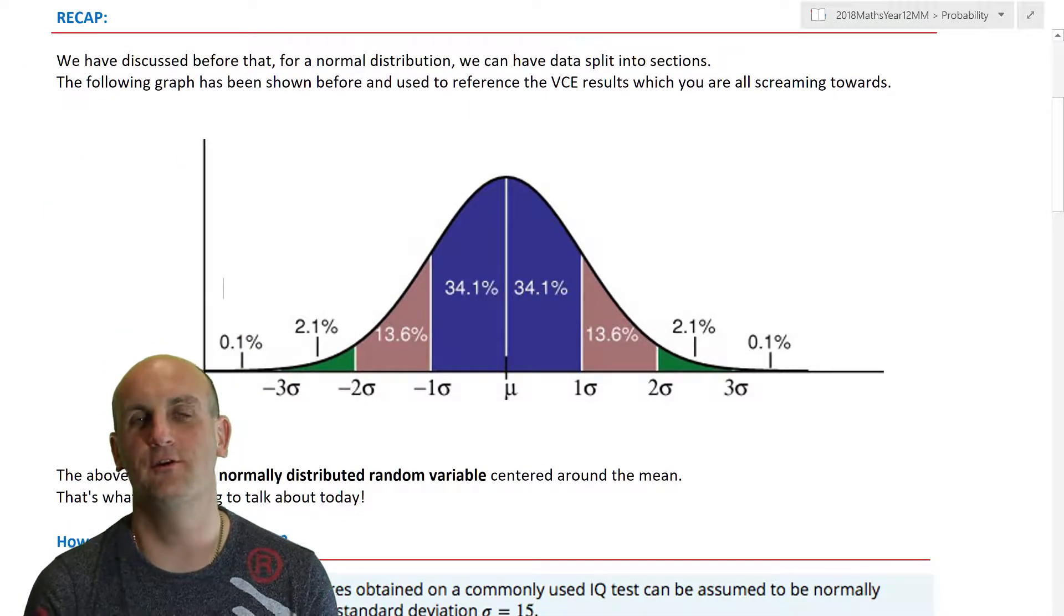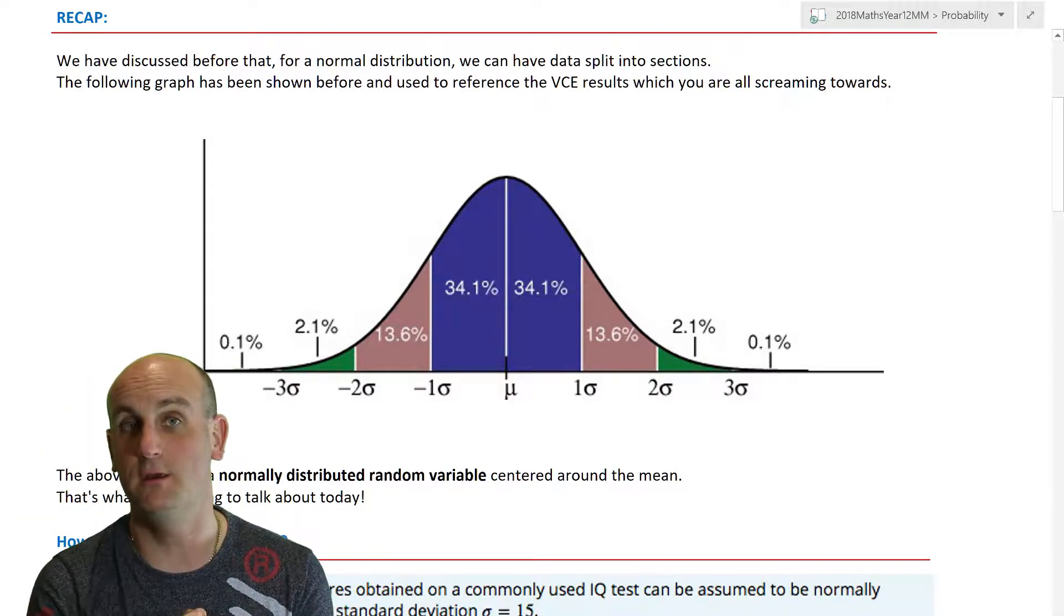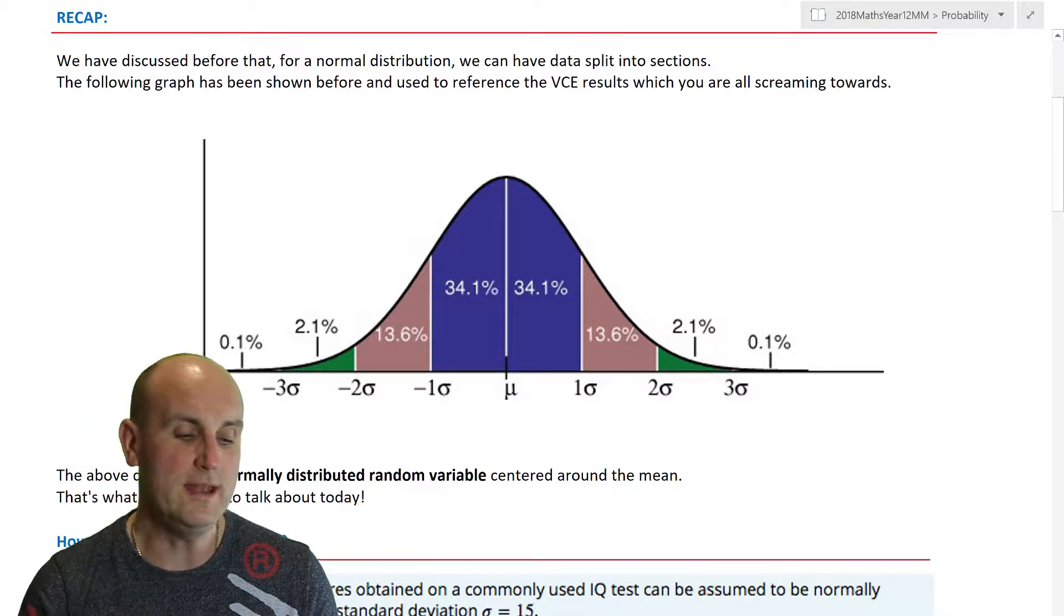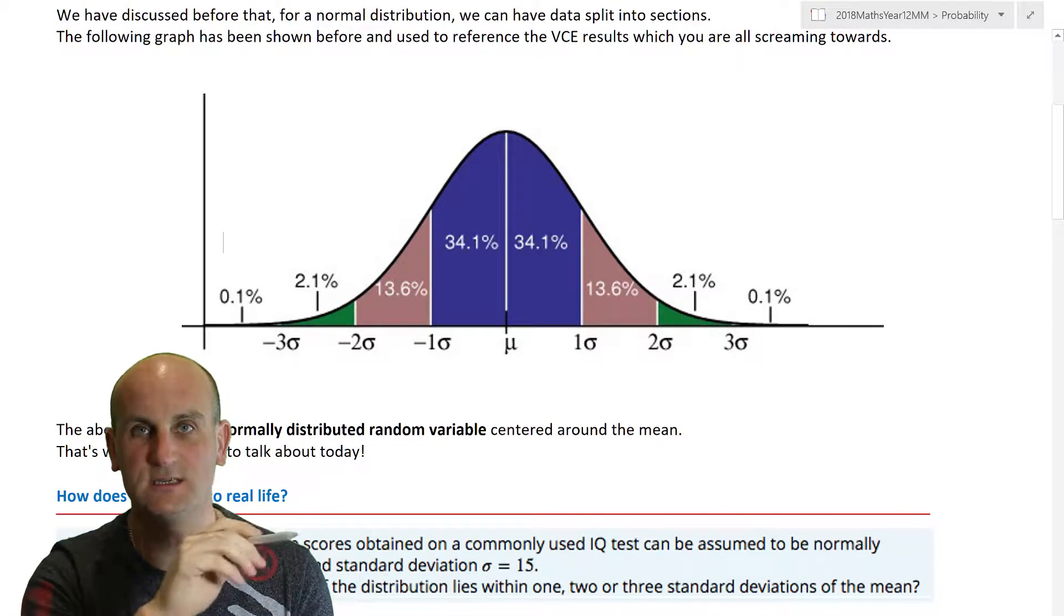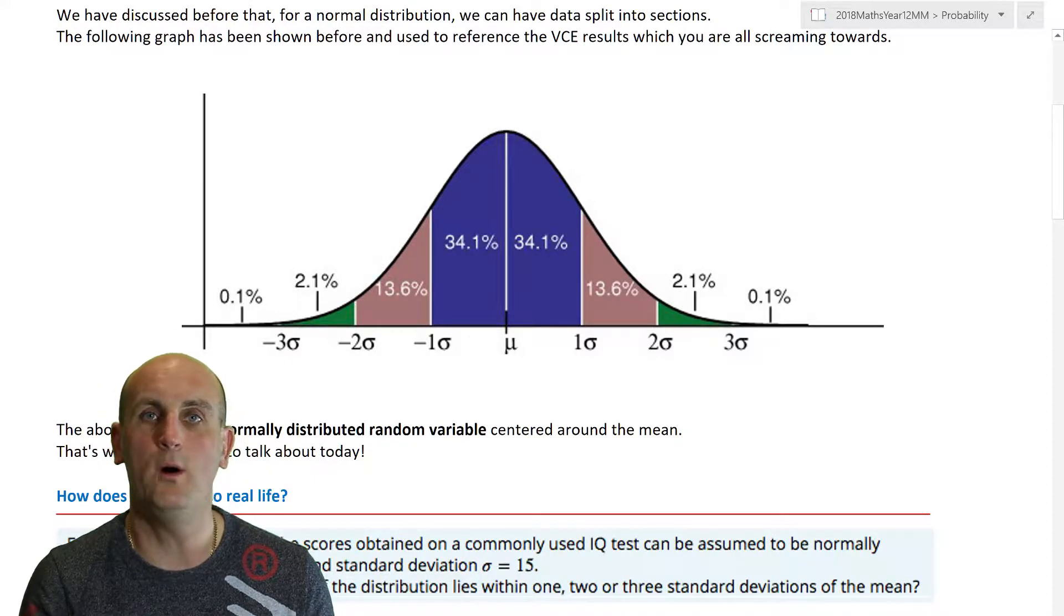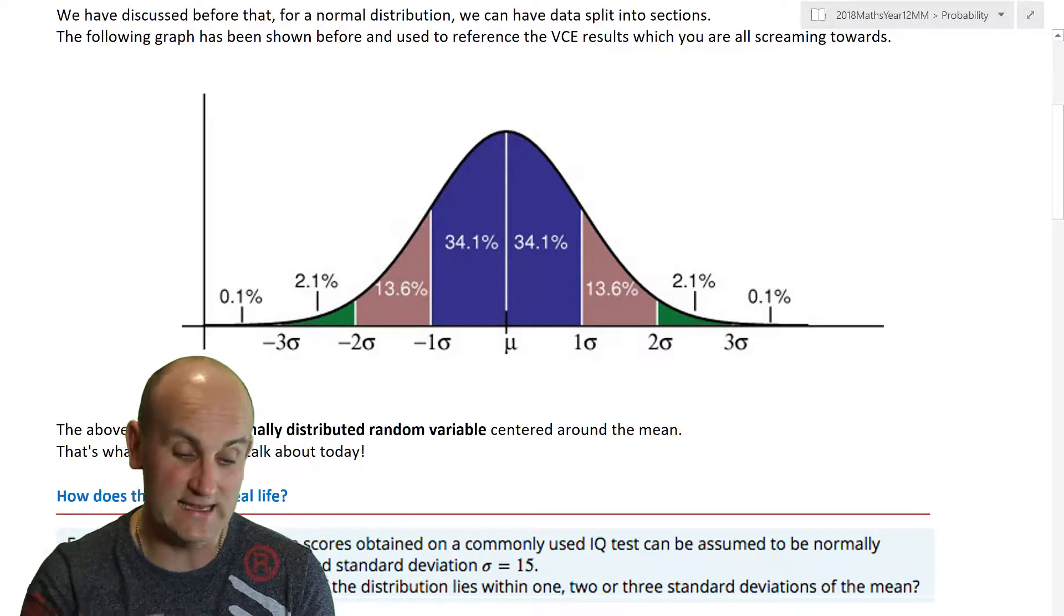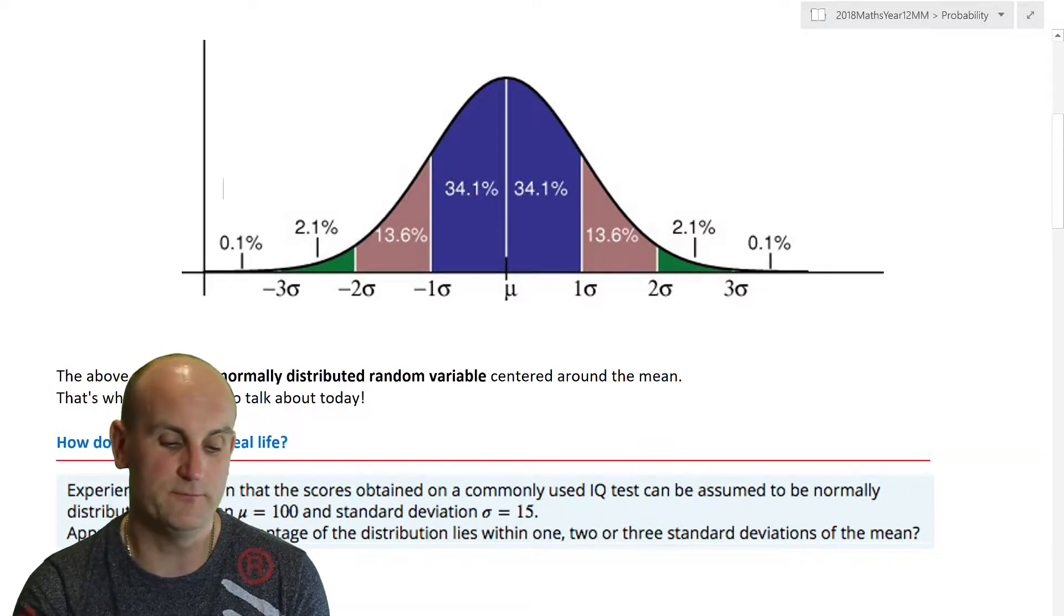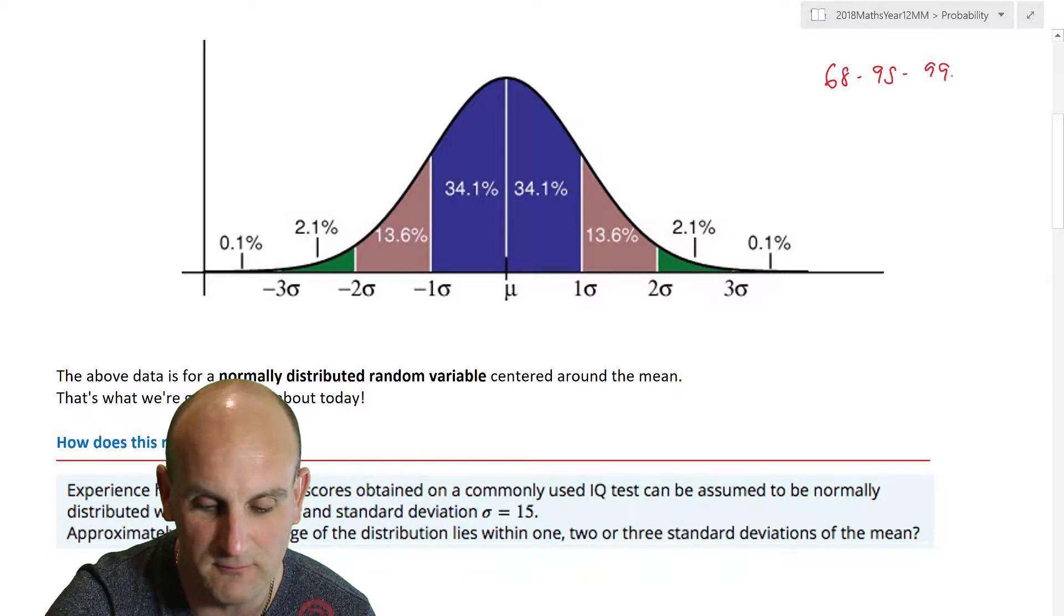Now, to recap, we've already looked at the normal distribution. We know it has a nice bell curve. We know that it's centered around μ, which is our mean, and we know that it's split up into standard deviations. What we're now going to look at, interestingly, is the fact that we can now actually work out that because it's symmetrical and because we can use a little bit of funky math, we can work out what percentage of data lies between each of those standard deviations.